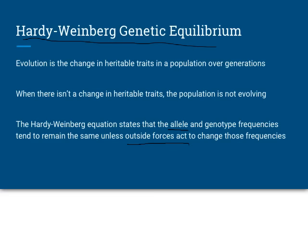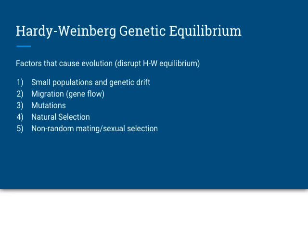If there is not a change in heritable traits in the population, that population is not evolving. Hardy-Weinberg said there are five things that can act as this outward force and cause change in a population. One of them we know: natural selection. The other four are new: small populations and genetic drift, migration or gene flow, mutations, and non-random mating or sexual selection. We're going to explore each of these.